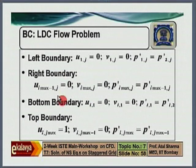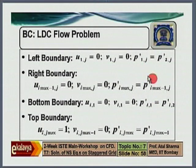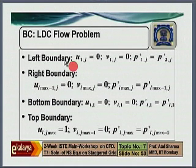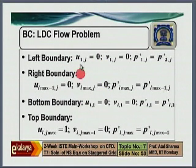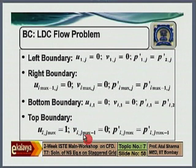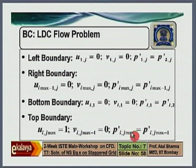On the left boundary, right boundary, and bottom boundary, which are solid boundaries, the normal gradient of pressure correction — these are the discrete forms of the normal gradient of pressure correction equal to zero. On the stationary boundary, U and V are zero. On the top boundary, U is 1, V is zero. Even if it is a top boundary, it is a solid boundary, so normal velocity will be zero, and normal gradient of pressure correction is zero there also.